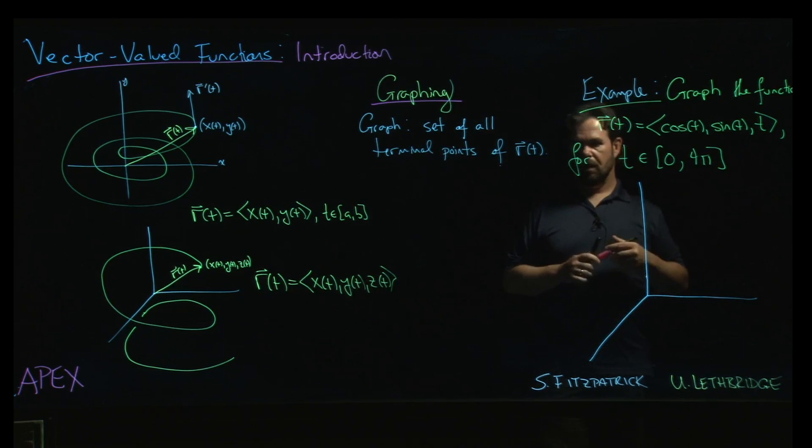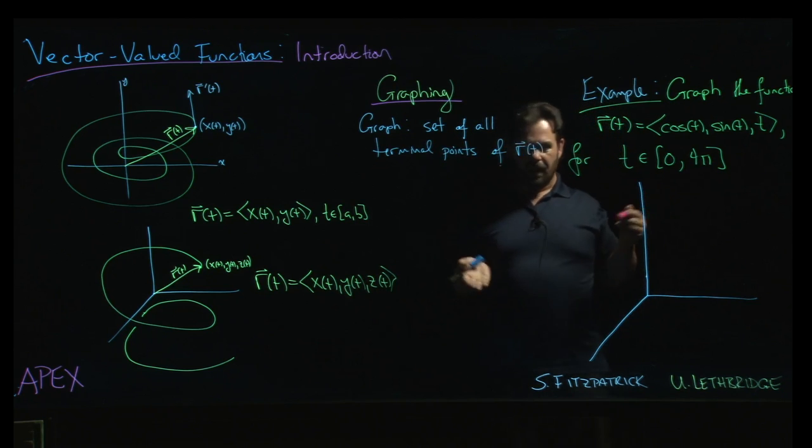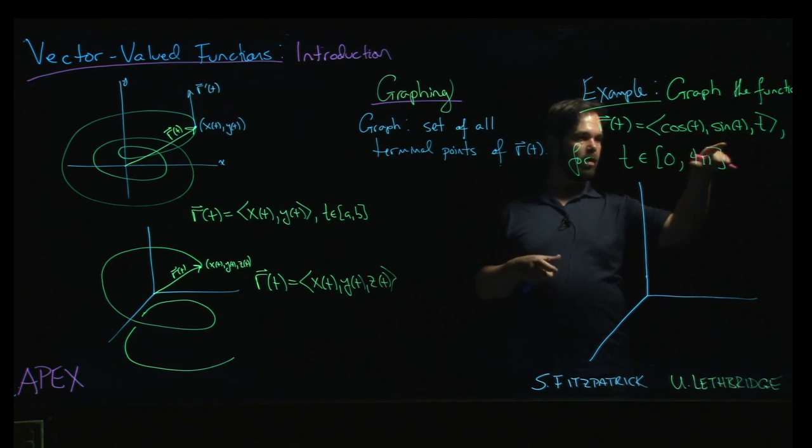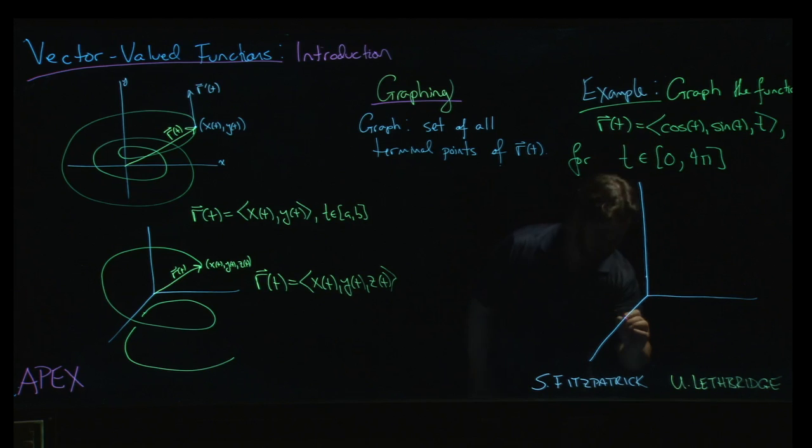Well, you could do a table of values if you want. You can try plotting a few points just to kind of get an idea. If t is equal to zero, x is one, y and z are both zero.